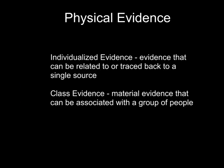Physical evidence can further be distinguished as individualized evidence or class evidence. Individualized evidence is evidence that can be related to or traced back to a single source. This is good evidence to have because you can link it back to an individual person. It narrows the spectrum of suspects, always requires comparison, and links that evidence to a single, unique source. Some examples of individualized evidence are fingerprints, DNA, and depending on the circumstances, hair.